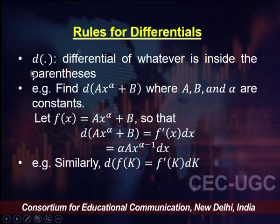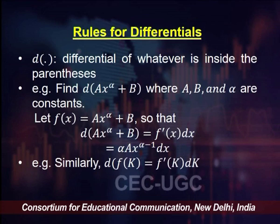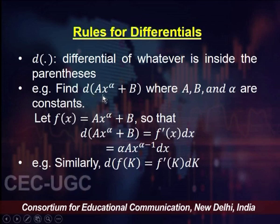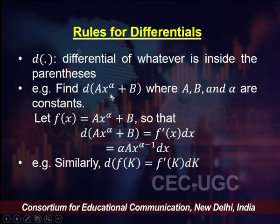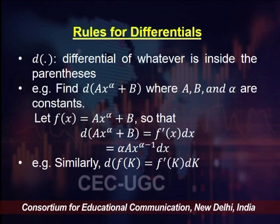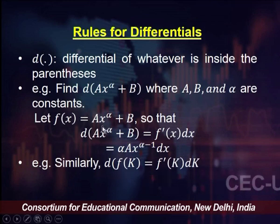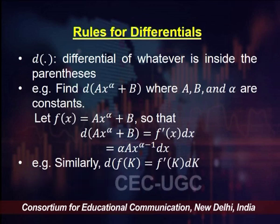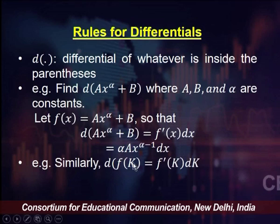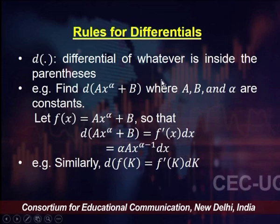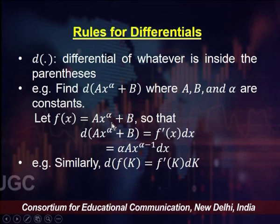Let us define d of something as the differential of whatever is inside the parenthesis. Suppose I want the differential of ax to the power alpha plus b, where a, b, and alpha are constants. If f of x equals a x to the power alpha plus b, then dy equals f prime of x times dx, which gives alpha times a times x to the power alpha minus 1, times dx. Similarly, if I have a production function where output is a function of capital deployed, then d f(k) would be f prime of k times dk.